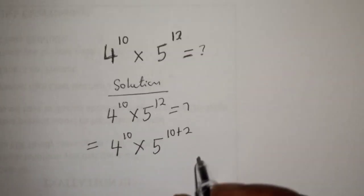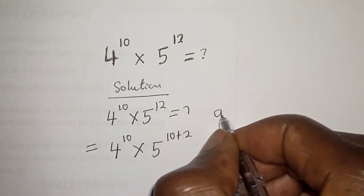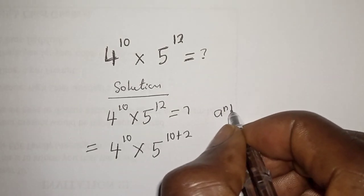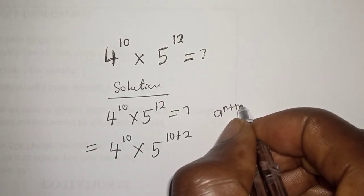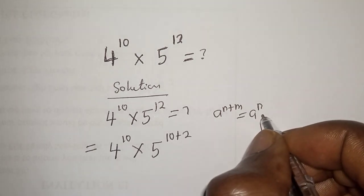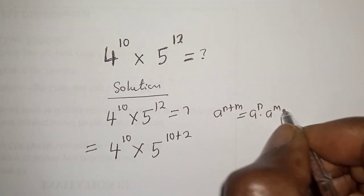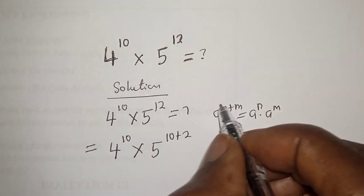And if you have a raised to power n plus m, this is equal to a raised to power n multiplied by a raised to power m.